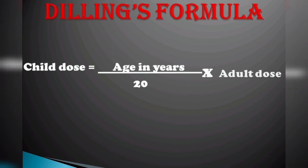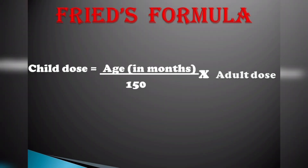Next is Dilling's formula: child dose is equal to age in years divided by 20, multiplied by the adult dose. This formula is used to calculate doses from 4 to 20 years. Compared to Young's formula, Dilling's formula is easier and quicker to calculate the dose.